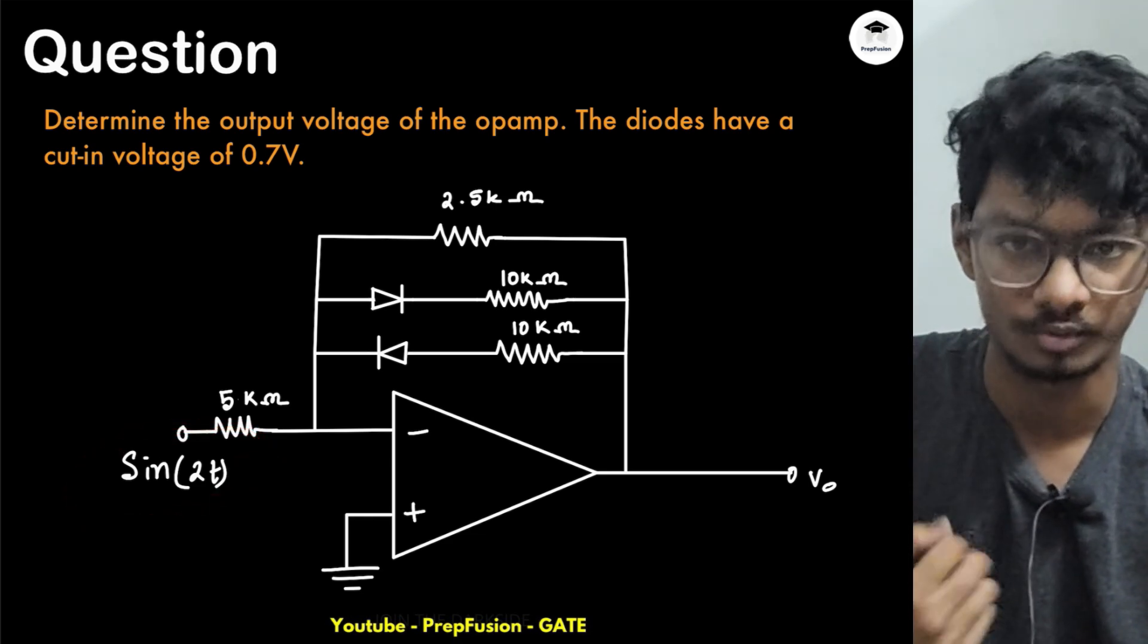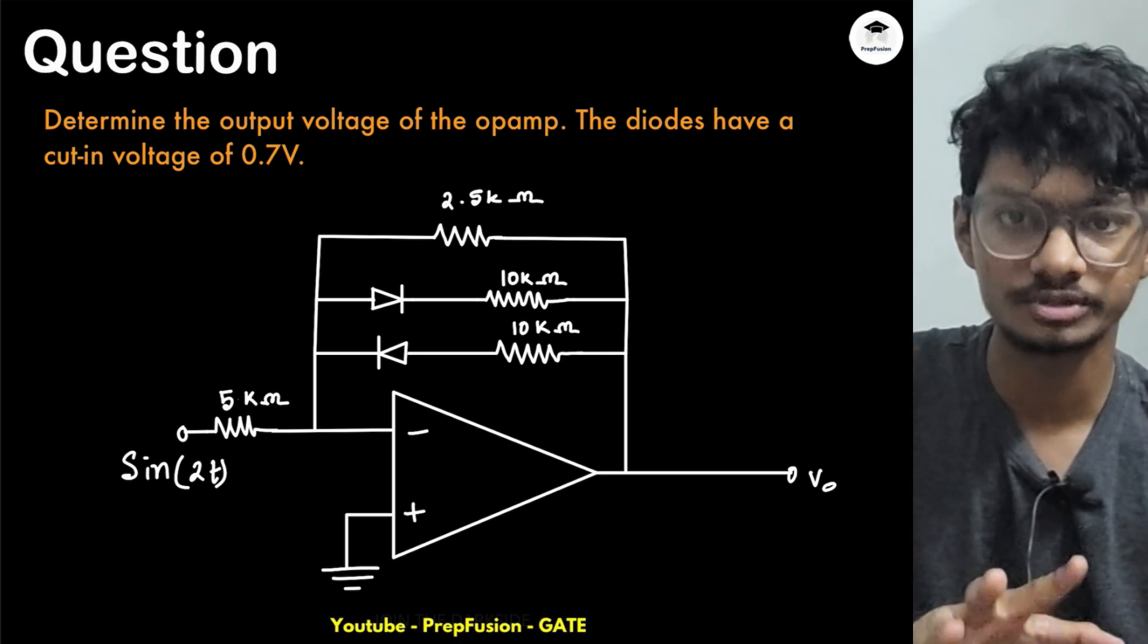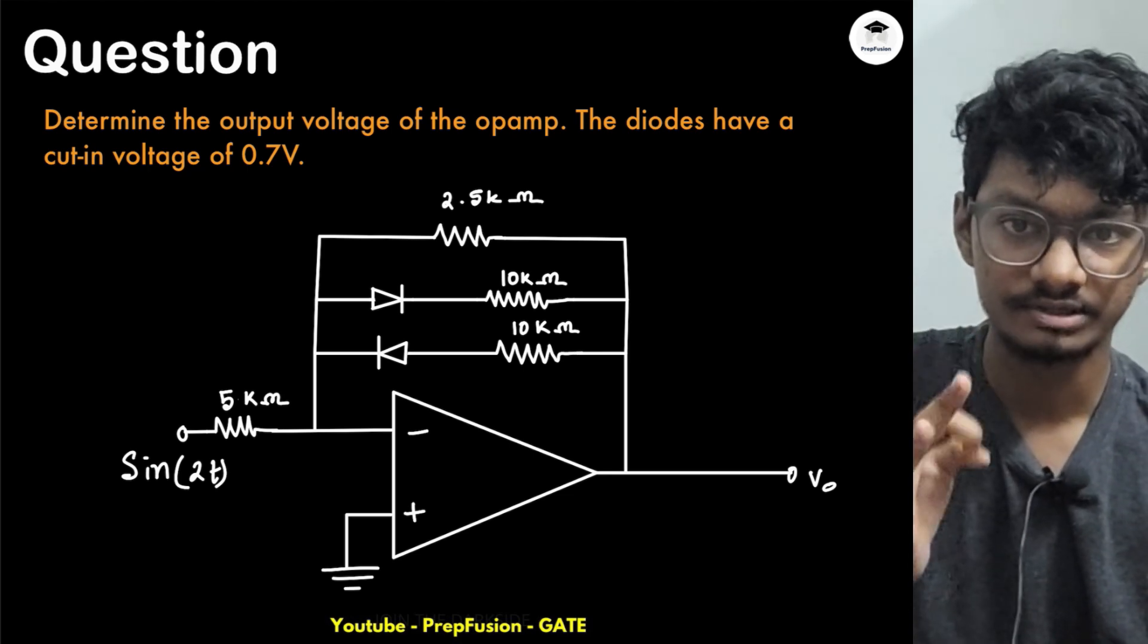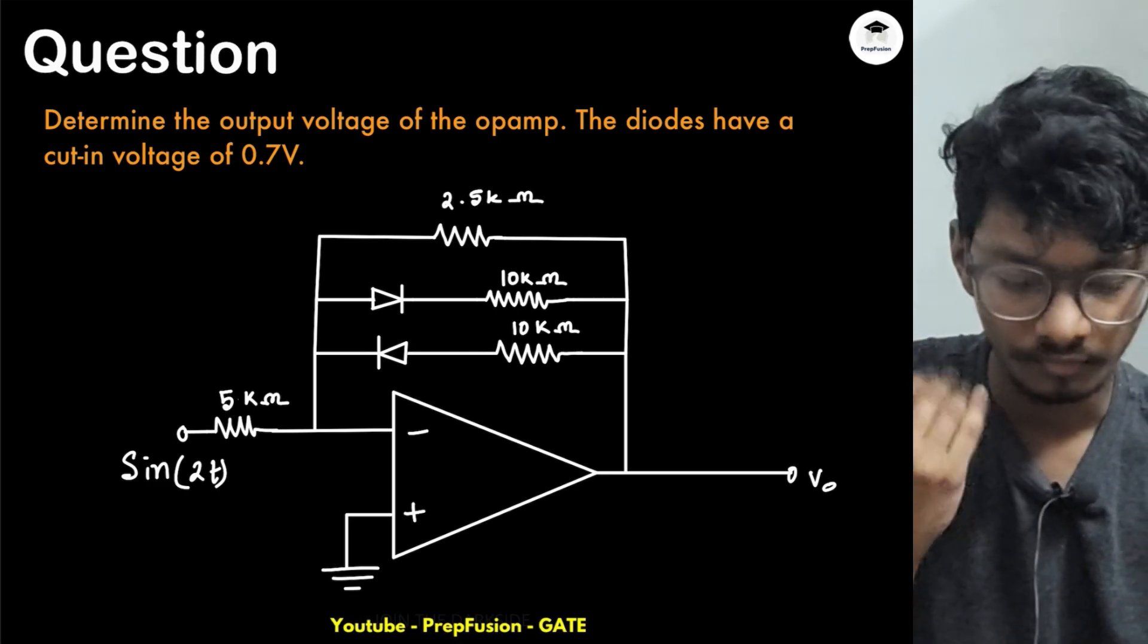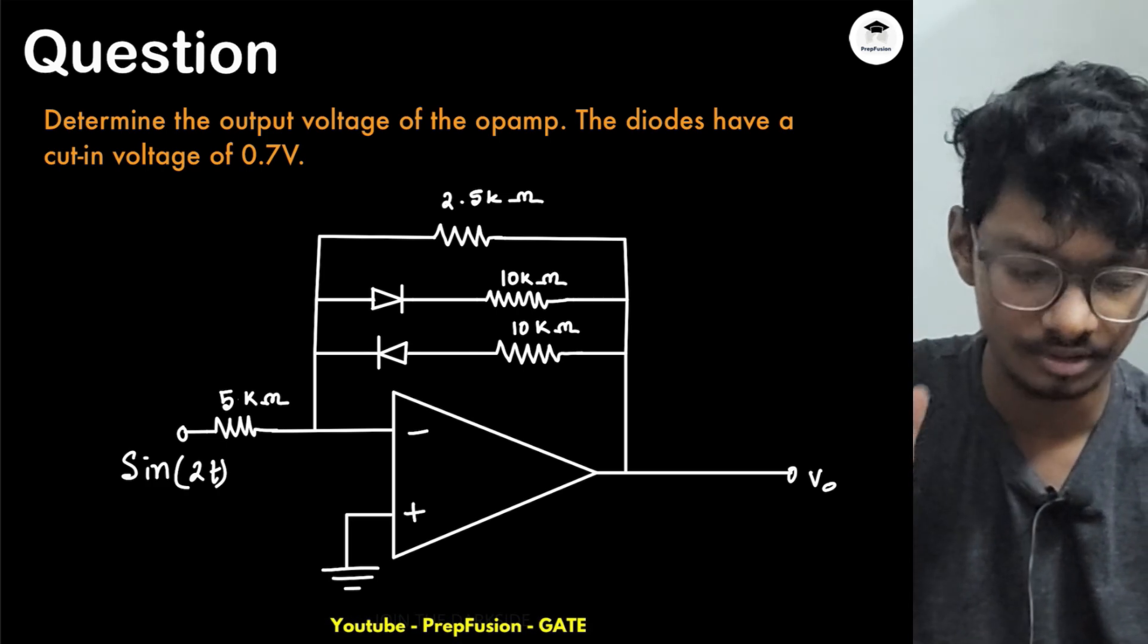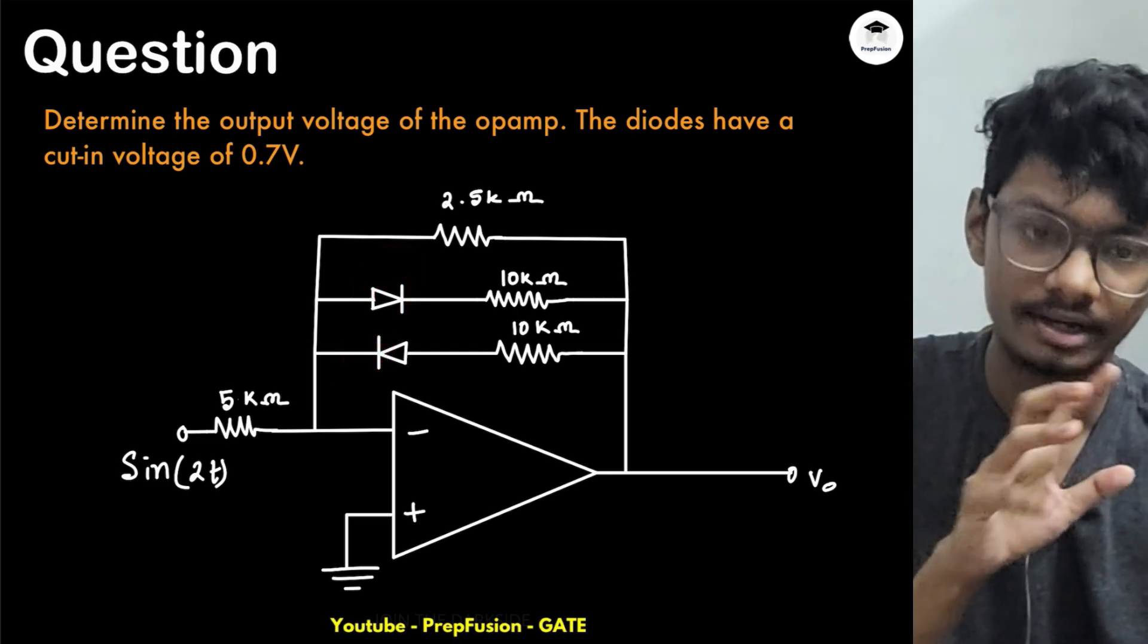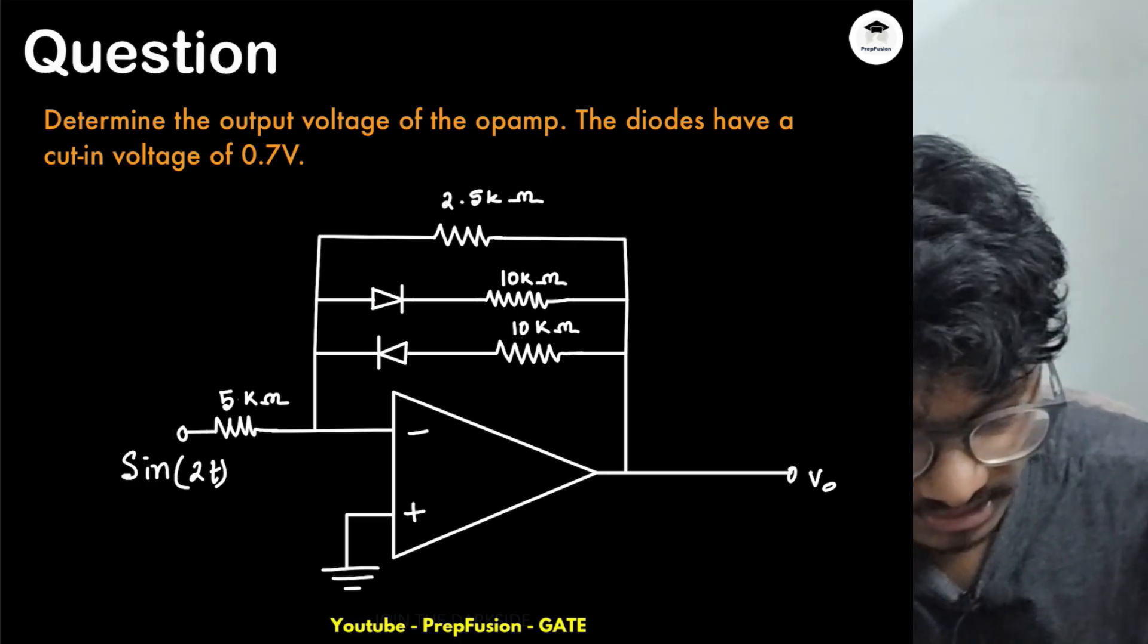How should we proceed in these types of questions? Whenever these types of questions are given, firstly you should assume any state. The simplest state for me is to assume that both diodes D1 and D2 are off. I will copy this circuit.